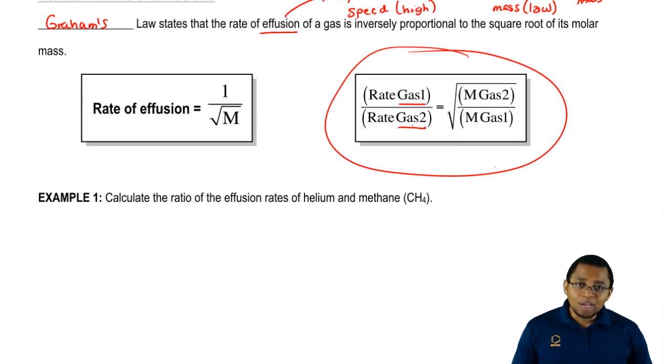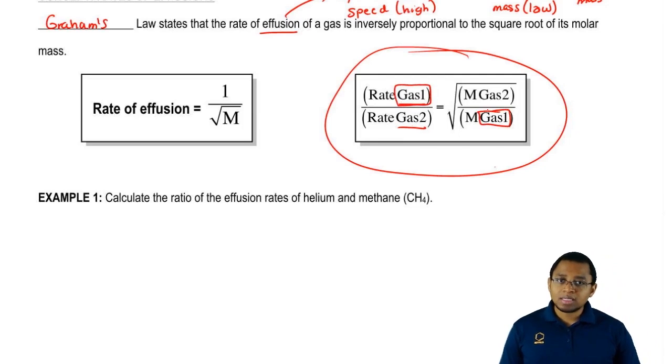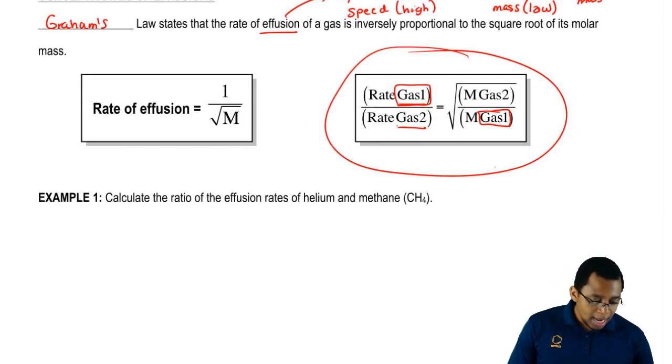We're going to say that equals the square root. Look, if gas one's rate is on the top, then its mass is on the bottom. Remember, Graham's Law says that rate and mass are inversely proportional. They're on opposite levels. Here, if the rate of gas two is on the bottom, then its mass is on the top. We're going to have to take this approach to answer some of these questions.